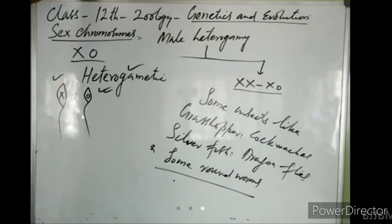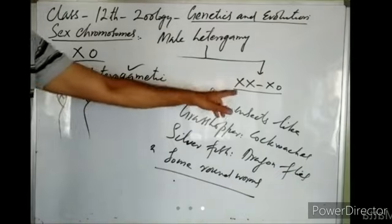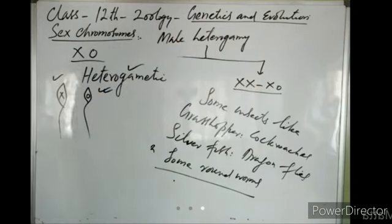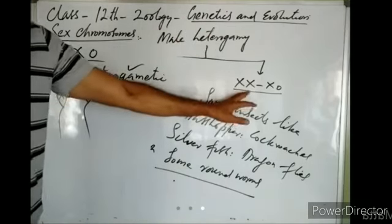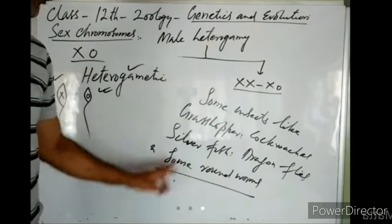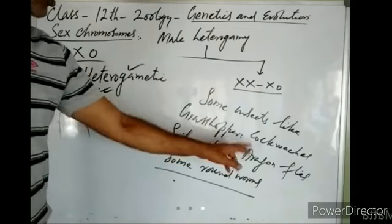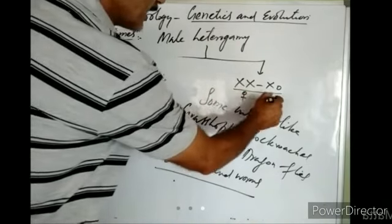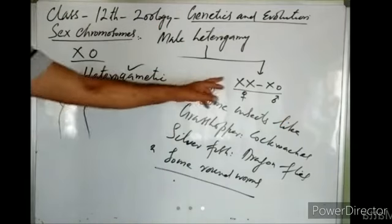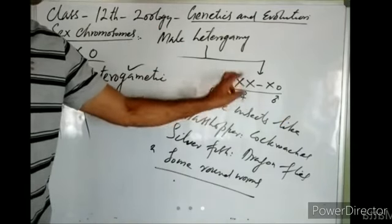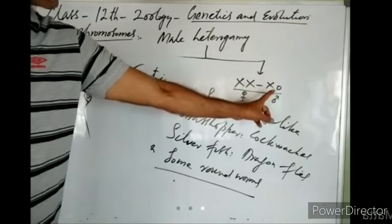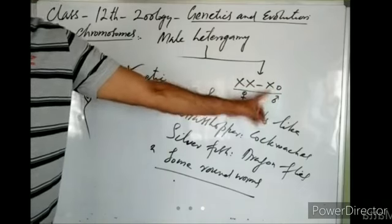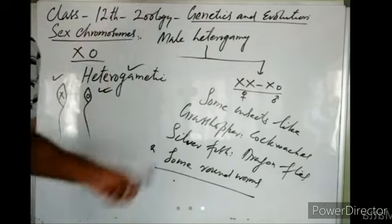We cannot say the male is heteromorphic because heteromorphic applies when two sex chromosomes are present. Since only one sex chromosome is present in the male, we cannot say male is heteromorphic. So in the XX/X0 condition, female is homomorphic and homogametic, while male is heterogametic.